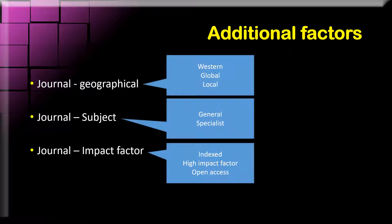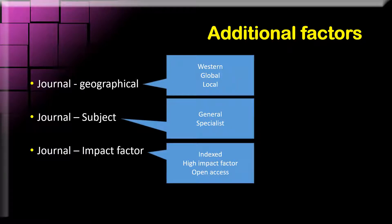Where you submit your paper is important. You need to know the interest of that particular journal. If you have a global question — something applicable everywhere — you can send it to any global journal. But if it's a very local problem, a study on outcomes in a local population, it would only be interesting to an editor of a local journal. You need to know the context of your study before you submit it.